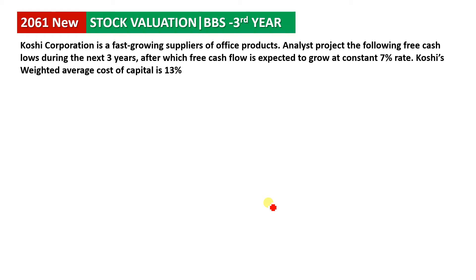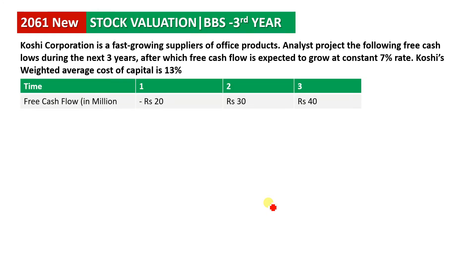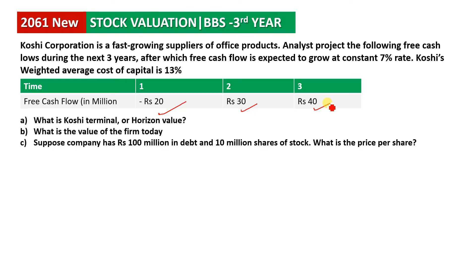We bring the investment to the company and see that this is a constant growth. The company's average cost of capital is 13. The cash flow is 1 million at the beginning, with negative cash flow in the second year and into the next year, and in the third year we will see the terminal value P.